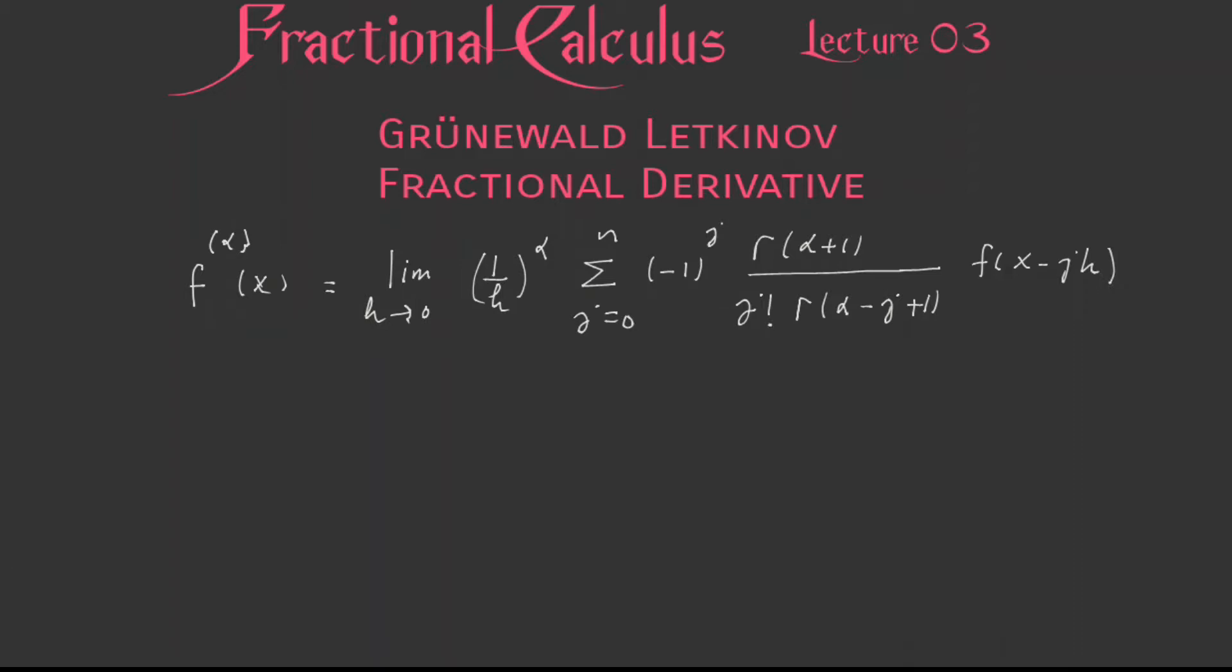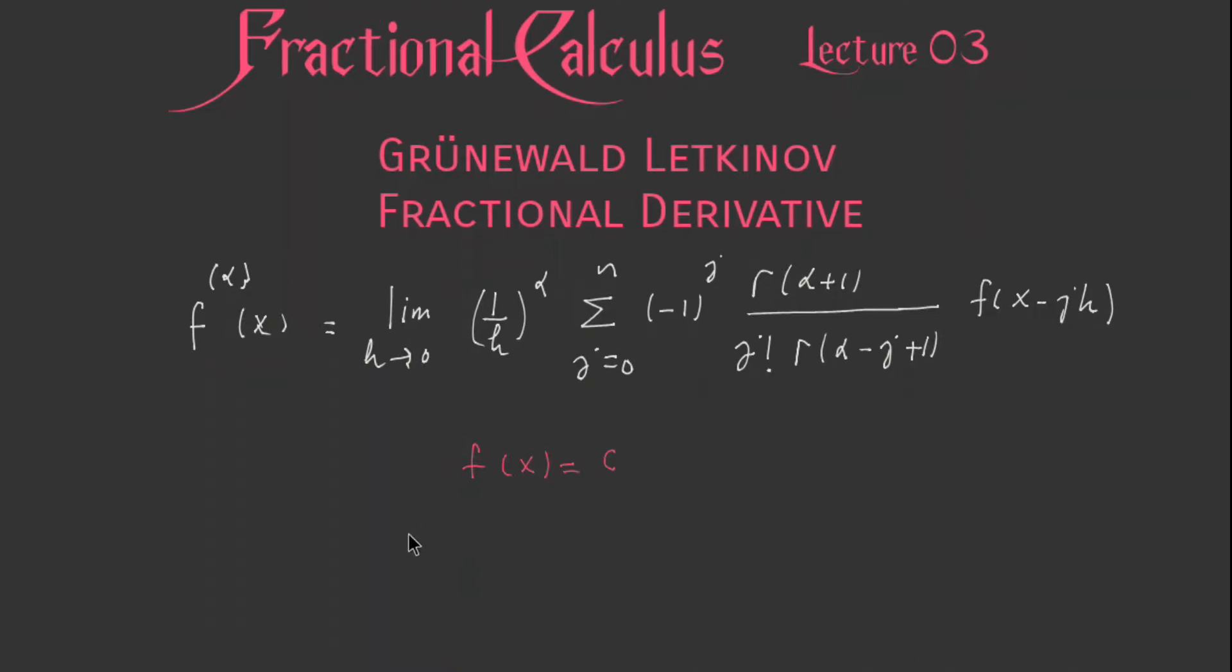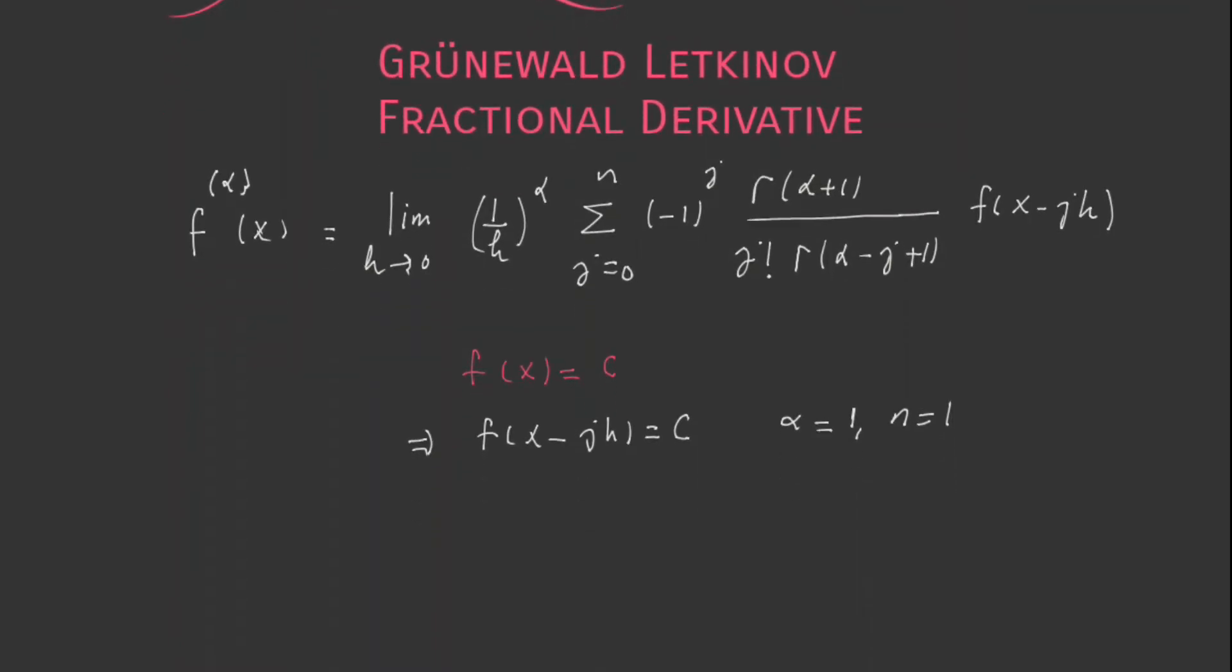For the first function, I will take f of x is equal to constant. So that means f of x minus j h will remain constant. I will find its first order derivative. Like I want to find the integer order derivative. It means I will take alpha is 1. When alpha is 1, n is also 1.